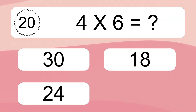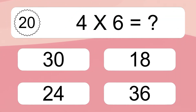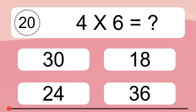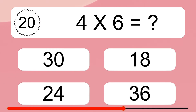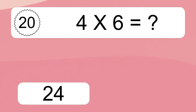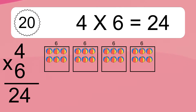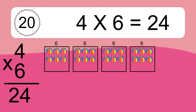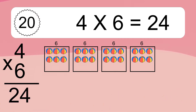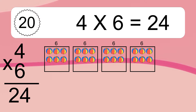4 times 6 equals what? 4 times 6 equals 24. We have 4 boxes and each box has 6 colorful balls inside. If you count all the balls in all the boxes together, you will have 4 times 6 balls. This equals 24 balls.